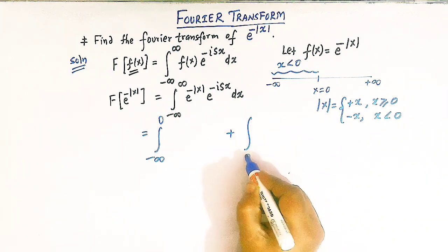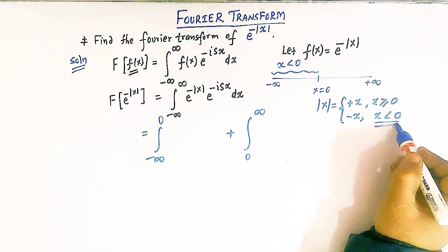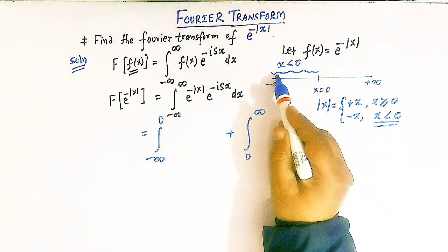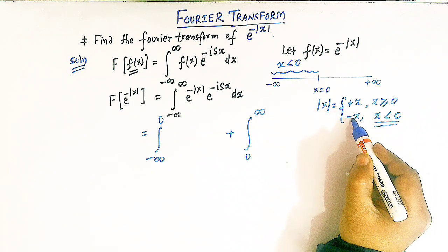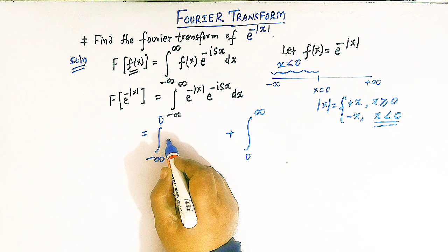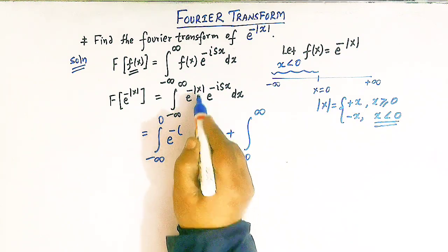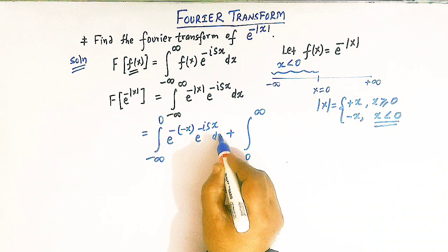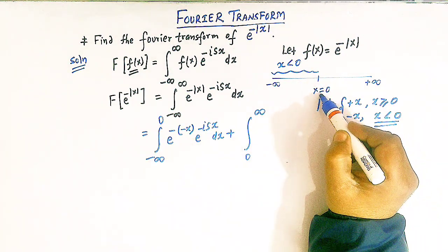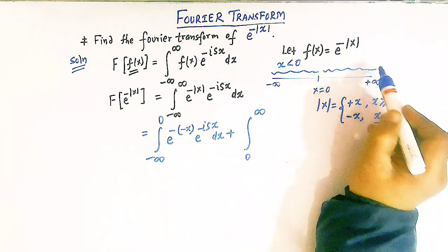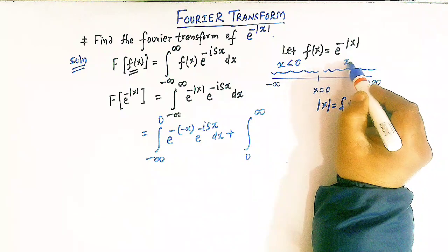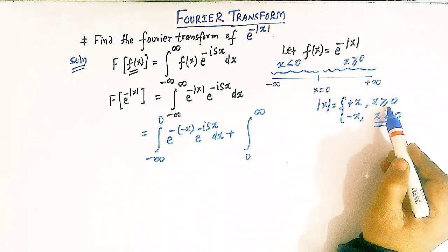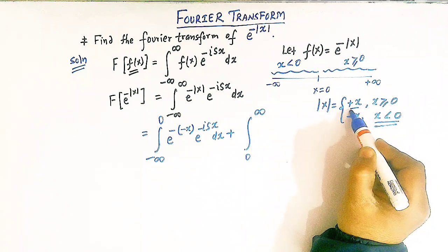So what we will do is split this integral as a sum of two integrals: one from minus infinity to zero, and the second from zero to infinity. When x is less than zero, going from minus infinity to zero, mod of x equals negative of x. So we have e raised to minus times negative x, times e raised to minus i s x dx. When we go from zero to infinity, including x equal to zero, then x is always greater than or equal to zero, and mod of x equals positive x.